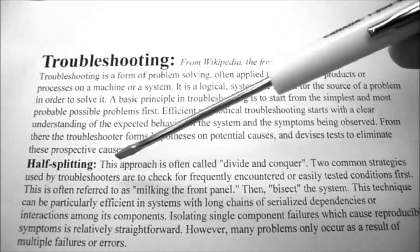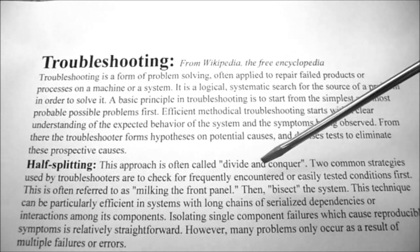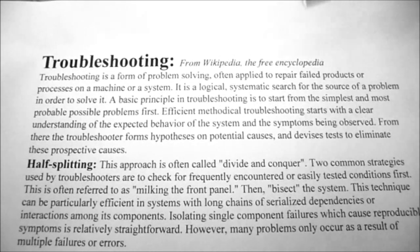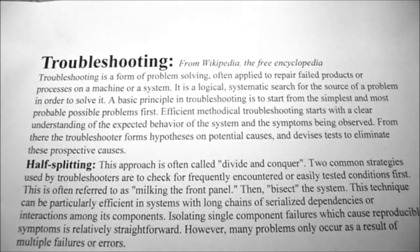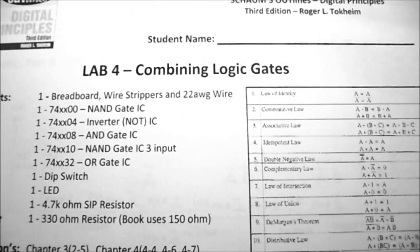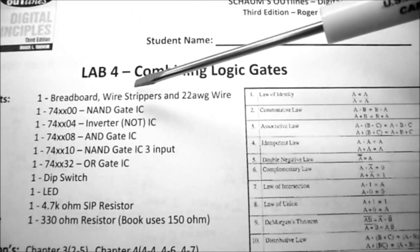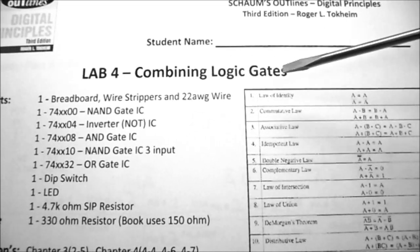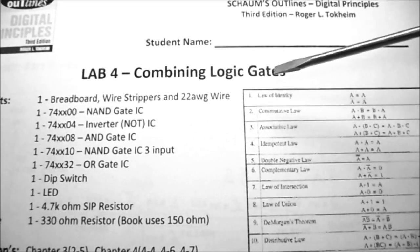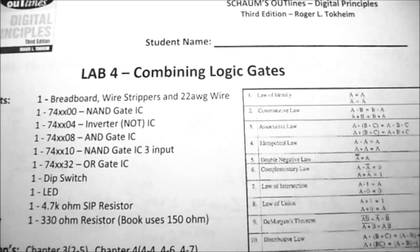We also get into half-splitting so I'm going to give you a demonstration of that on lab number four. Lab number four is a good lab to start talking about troubleshooting because now we're combining logic gates and we don't really know where in our circuit the problem might be.